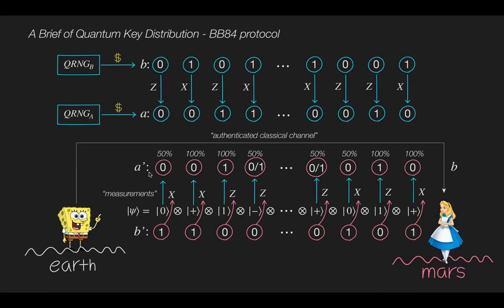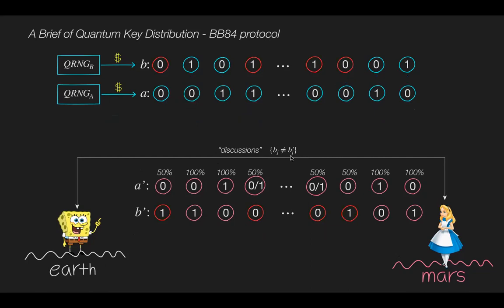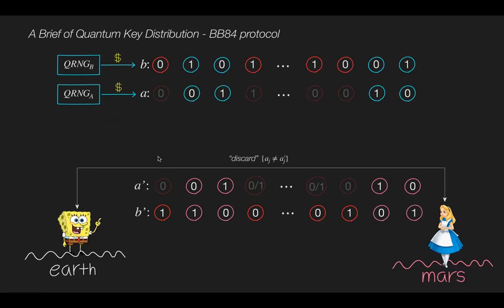At this point, Bob announces his random string b to Alice over an authenticated public classical channel. Once Alice receives the string b, they discuss which bits are not equal in their random strings b and b prime. Now Bob and Alice decide corresponding bits in their strings a and a prime. Then both discard each bit in a and a prime where they used different bases. So Bob and Alice each have remaining strings lb and la. In theory, the length of each remaining string is close to 2n with a very high probability.